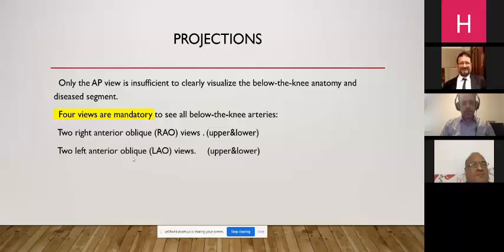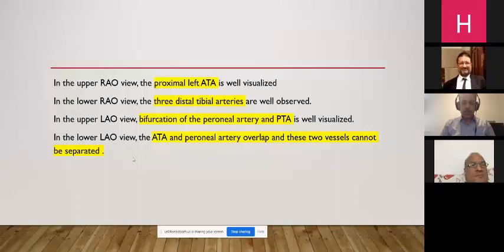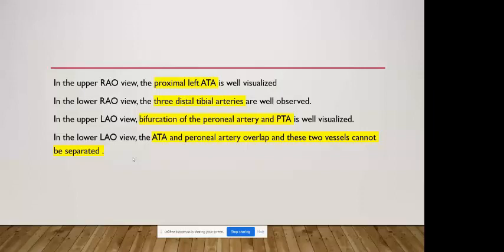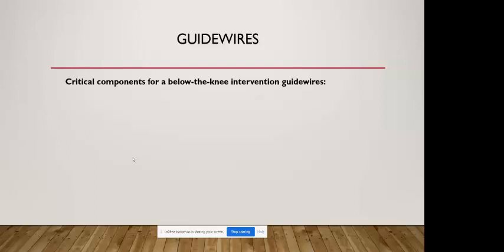The advantages of the antegrade access are excellent guidewire maneuvering and good pushability of catheters and balloons. Regarding projections, the anteroposterior view alone is insufficient — four views are mandatory to see all below-the-knee arteries: upper and lower RAO and LAO. In the upper RAO, the anterior tibial artery is well visualized; in the lower RAO, the three distal tibial arteries; and in the upper LAO, the bifurcation of the peroneal and posterior tibial arteries.